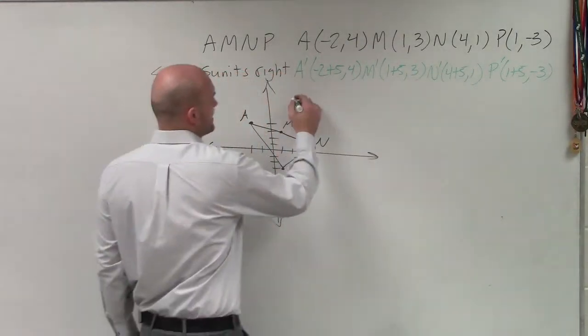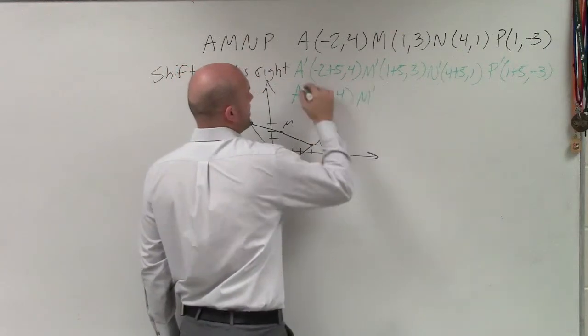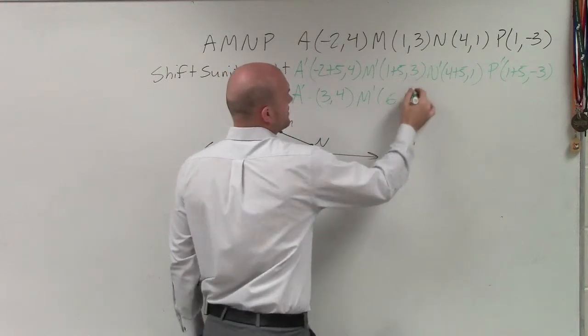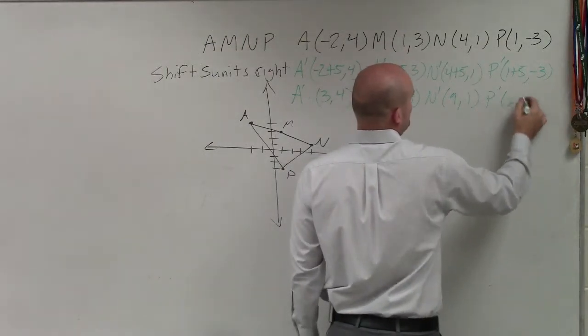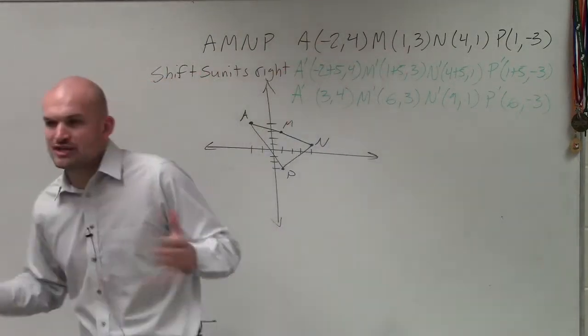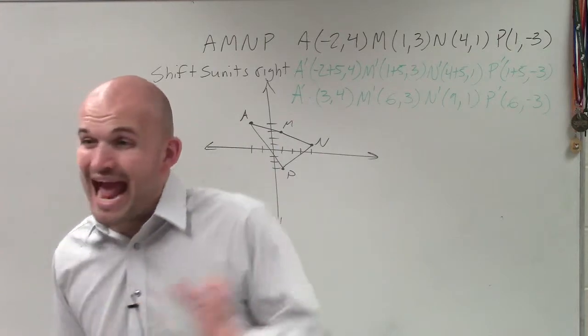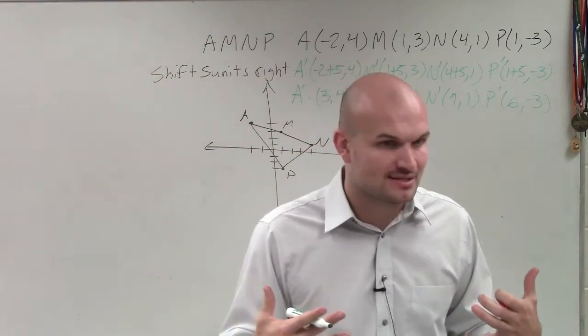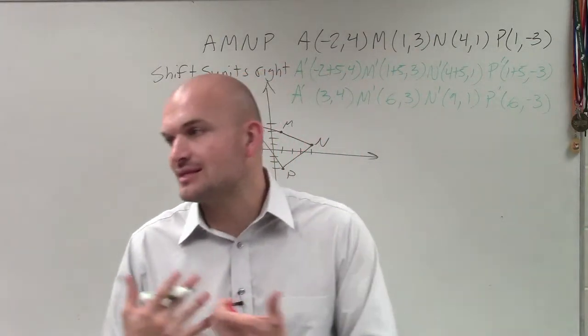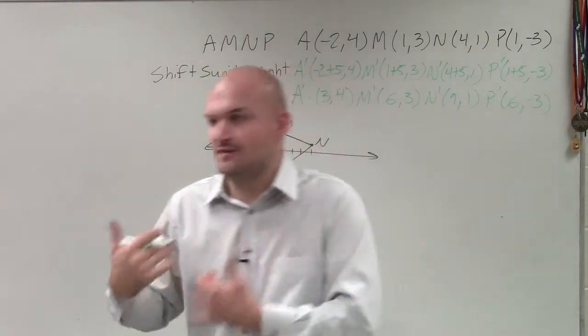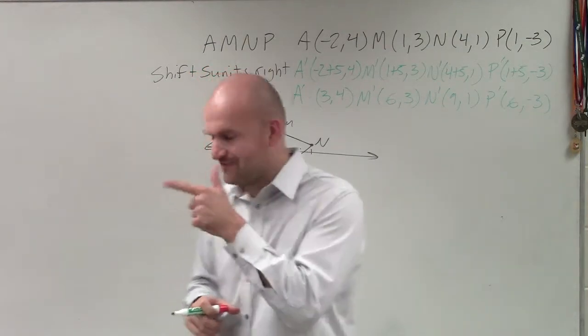So now, let's go and figure out what they are. A equals 3 comma 4. M prime is 6 comma 3. N prime is 9 comma 1. And P prime is 6 comma negative 3. So ladies and gentlemen, if I'm moving a graph horizontally, if I'm shifting something horizontally, I'm going to want to add and subtract to the x-coordinate of my points. And if I'm moving my graph to the right, I'm going to be adding a positive number. And if I'm going to move it to the left, I'm going to want to add a negative number.